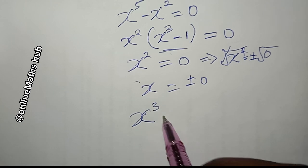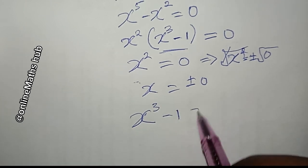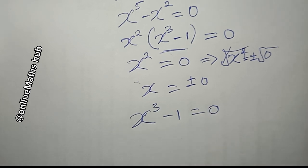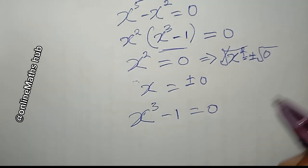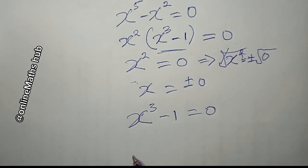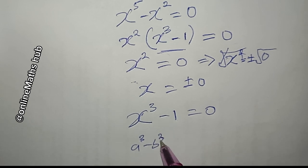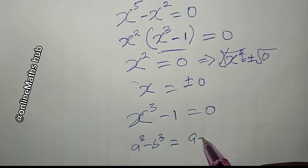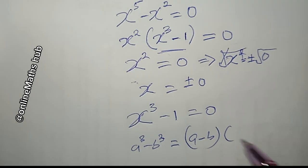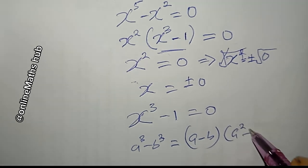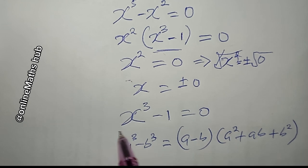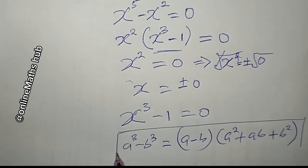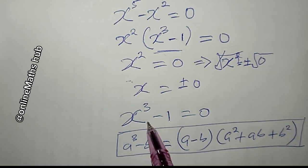Secondly, x power 3 minus 1 equals zero. We can remember that a cubed minus b cubed factors as (a minus b) times (a squared plus ab plus b squared).